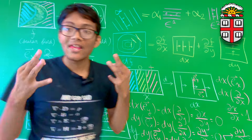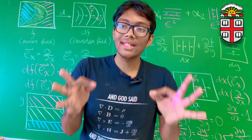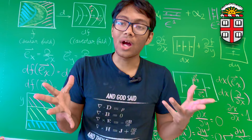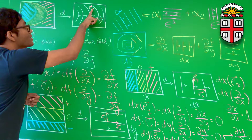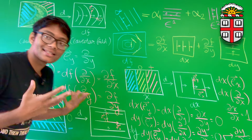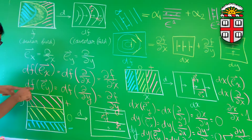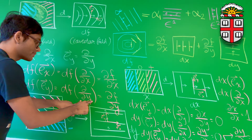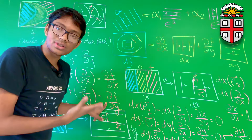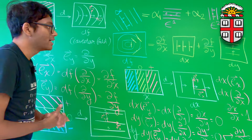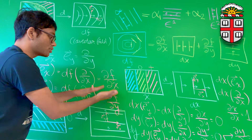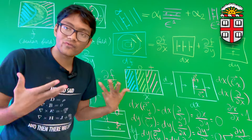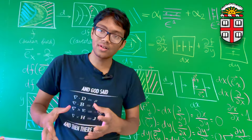Similarly, if I want to know how many contour lines e_y pairs, I can simply apply my co-vector field df to e_y. Since e_y is ∂/∂y, I get the partial derivative ∂f/∂y. So that tells me I can express partial derivatives in a new way as co-vectors acting on basis vectors.